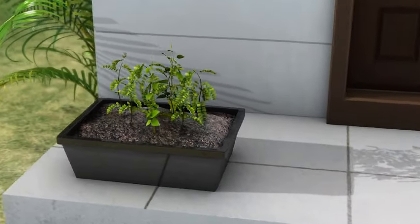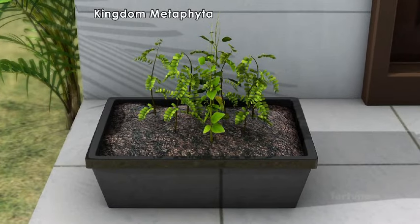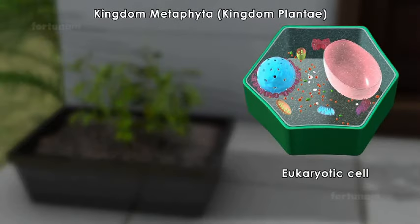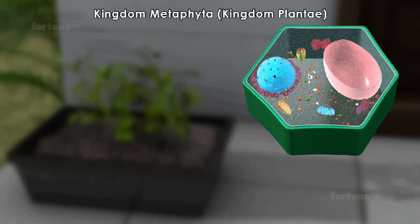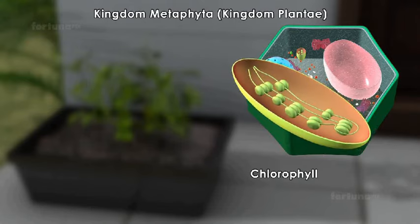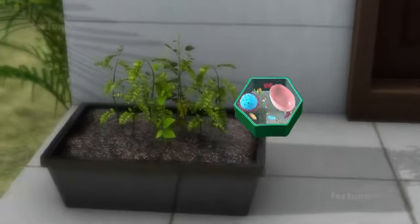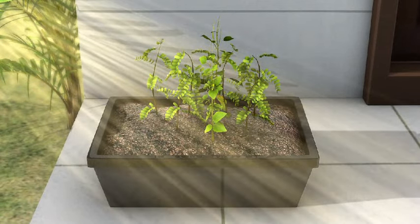The fourth most complex kingdom is Kingdom Metaphyta, also referred to as Kingdom Plantae, and includes multicellular plants with eukaryotic cells, meaning they have a nucleus. The cells of this kingdom will contain a cellulose cell wall and a green pigment called chlorophyll. Chlorophyll aids in photosynthesis, a process during which plants make their own food by utilizing sunlight.